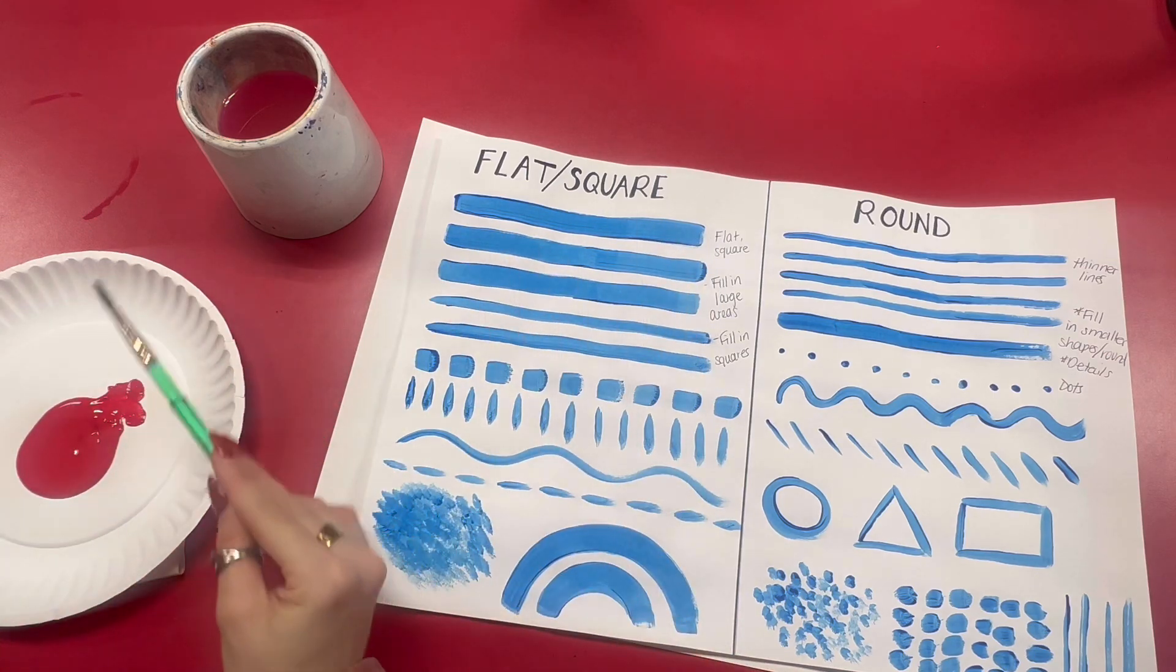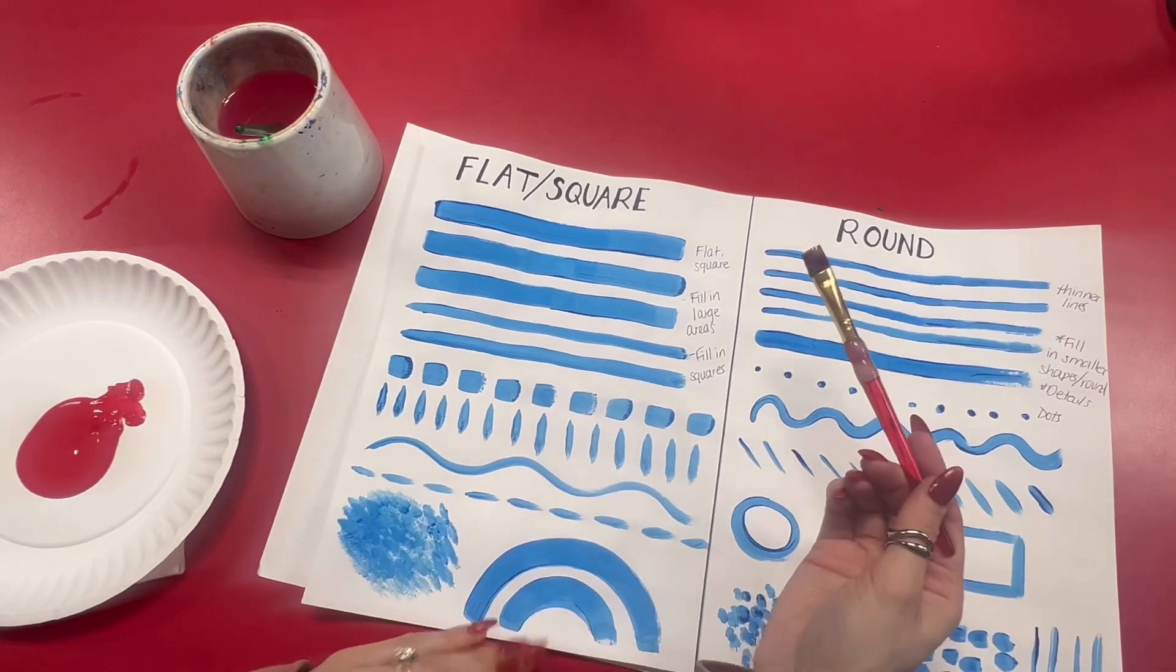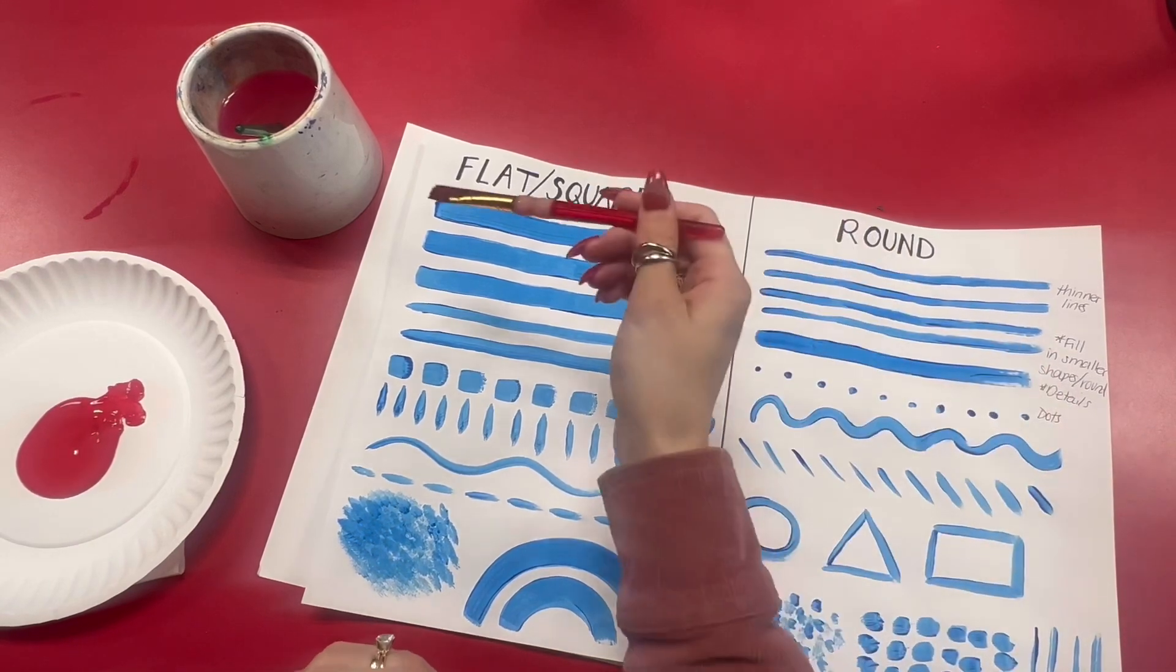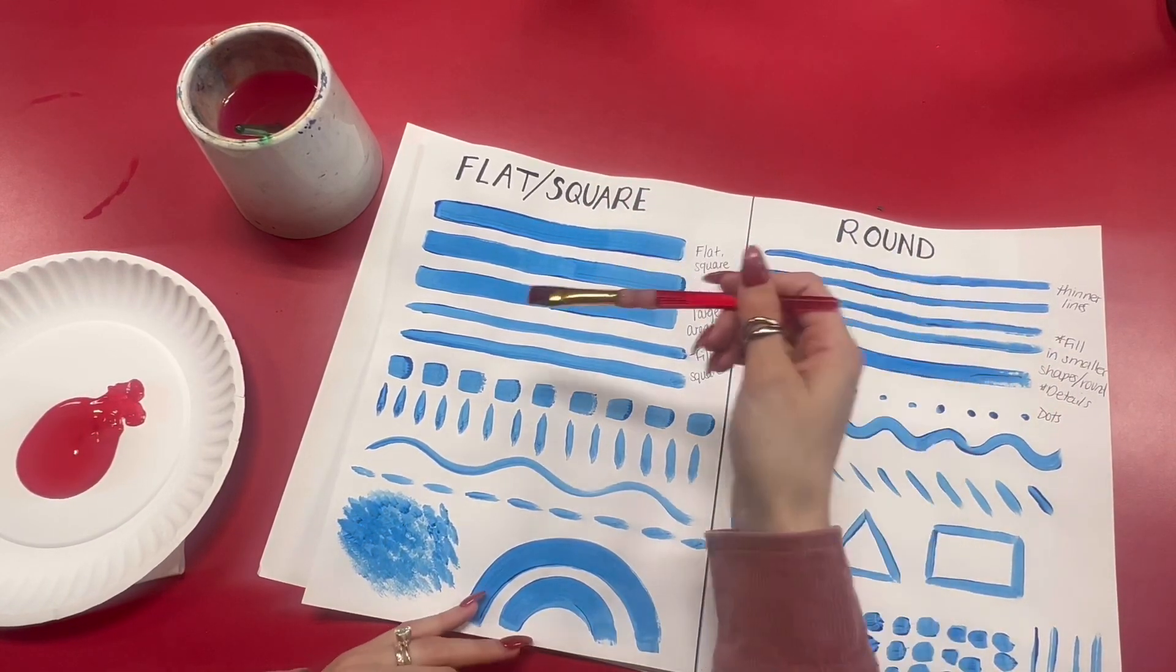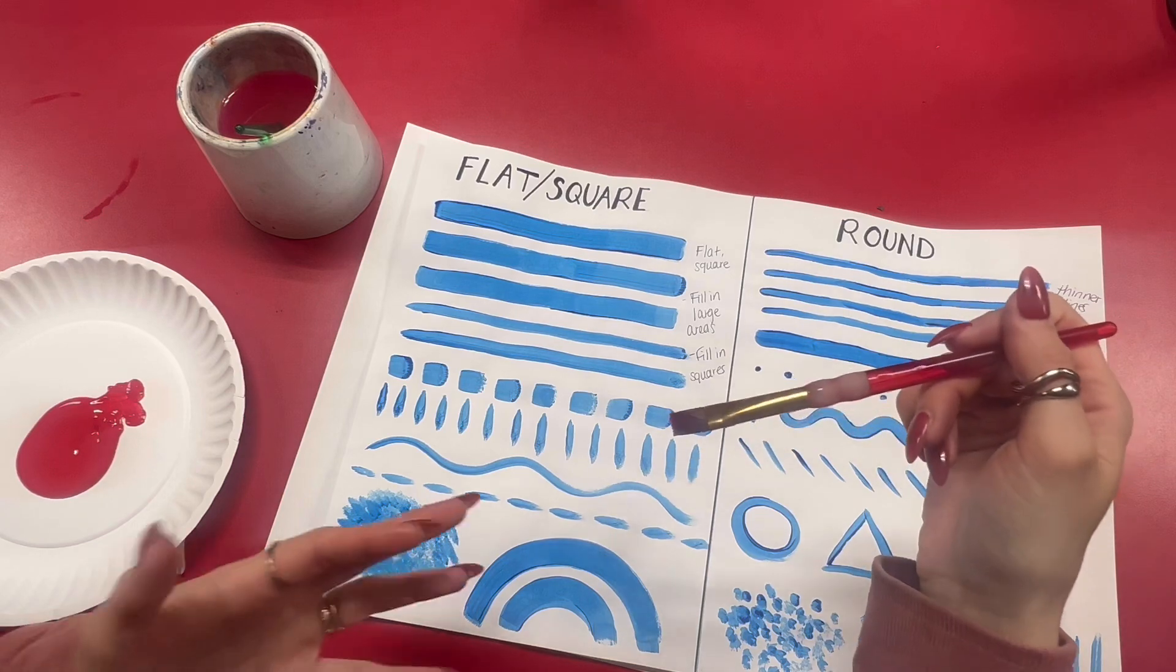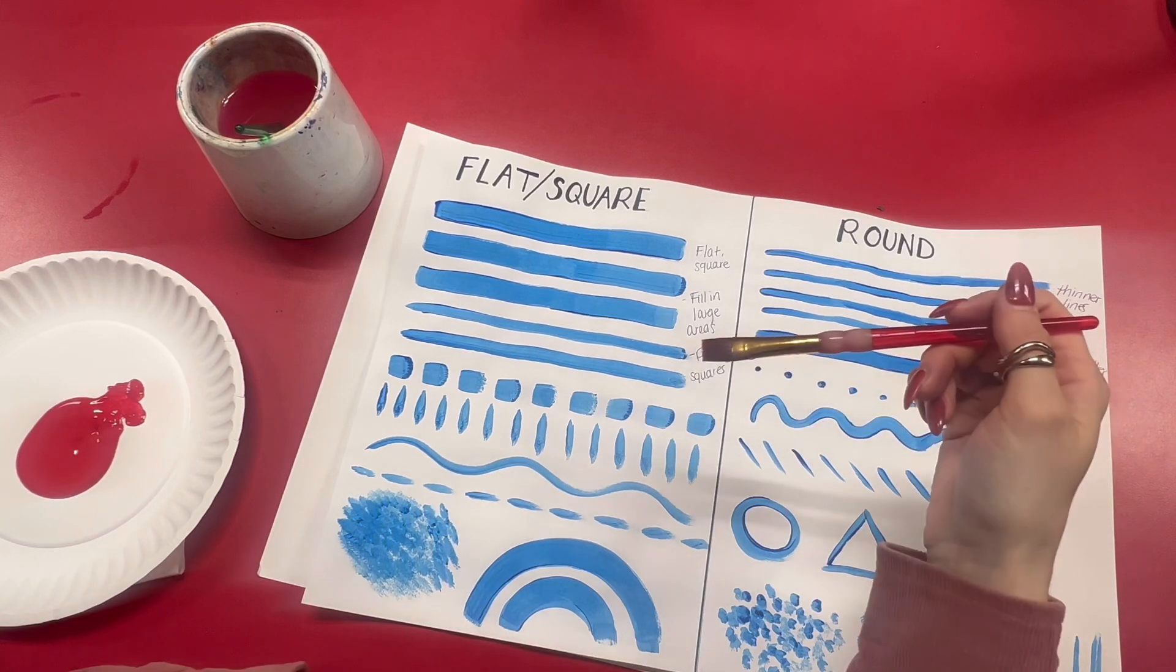Now the flat square brush is used for filling in large areas, painting things that are more square, doing lines, filling in things like a sky or any square object.